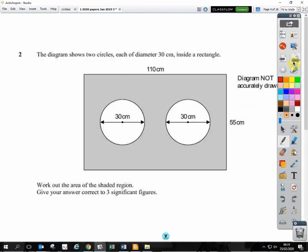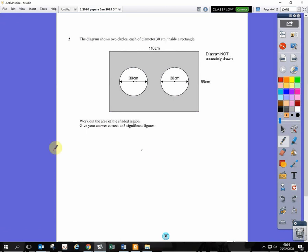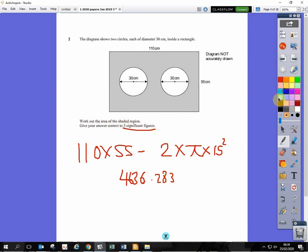The next question, we'll have the area of the shaded region. What we can do here is work out the area of the rectangle, and then subtract both of the circles from that. So the area of the rectangle is 110 times 55, and then we can minus 2 of the circles. So it's 2 times pi r squared. Remember, r is 15. When we type this into the calculator, we get 4,636.283. We'll round this to 3 significant figures. So 3 significant figures, 1, 2, 3. That's this column. So it should be 4,640.